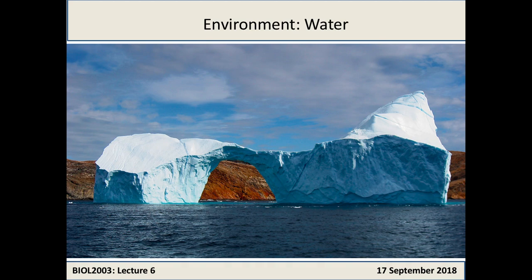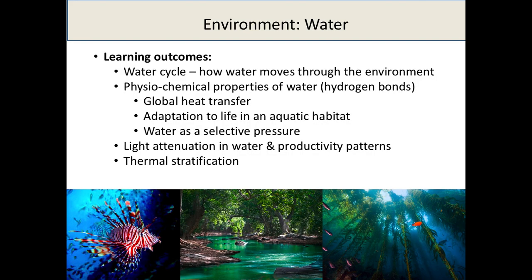We started talking about climate and the environment, and the big environmental drivers or variables which determine a consumer's ecology — the ecology we see in a region or system. Today we're going to talk about water in many and wonderful forms. We know water is essential for life, but why? What characteristics make it so important? We'll talk about the water cycle, how water is distributed and moves around the earth, and the physicochemical properties of water and the type of bonds it forms.